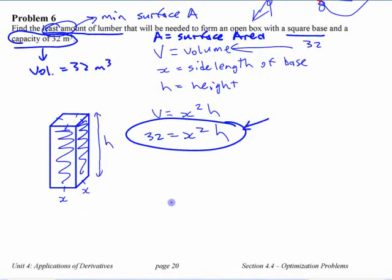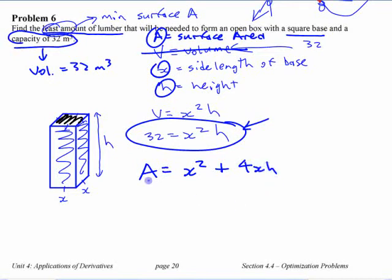We got something relating those two. This is not a variable anymore, so how many variables do we have still? We have A, we have x and we have h. If the top is open though, if it's an open top box, we just have x squared for the base plus 4xh, where this is base and sides.